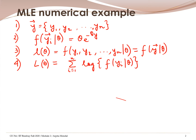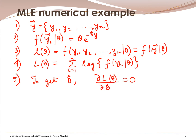What we need to do is optimize — that means we need to find the value of theta which corresponds to the maximum value of the log-likelihood function. To get theta hat, we differentiate the log-likelihood function and equate it to zero.